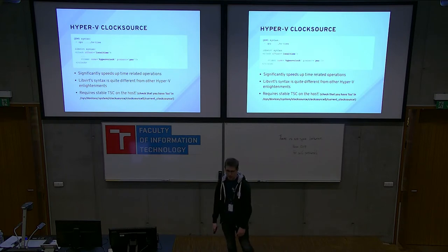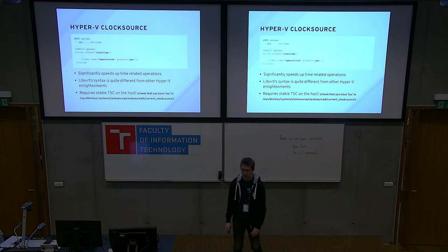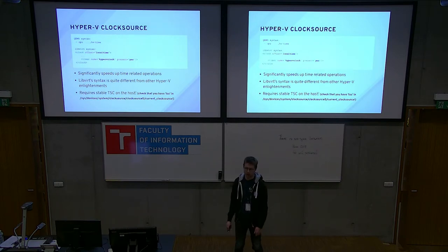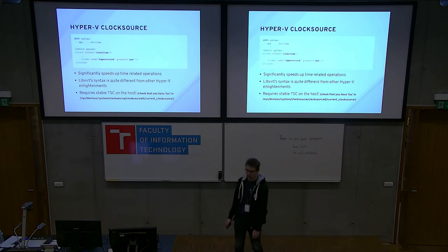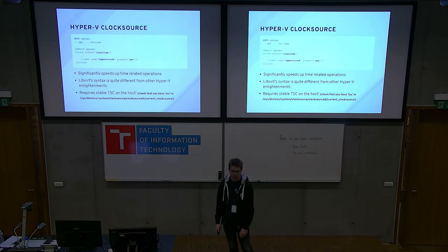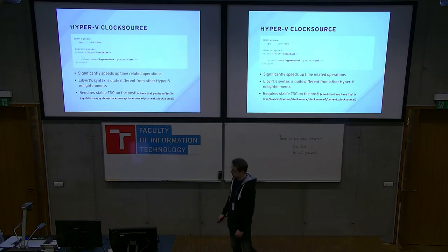The Hyper-V clock source is actually one of the most important enlightenments. Some workloads read the time very frequently — for example, when timestamping logs, database records, or network packets. You want to get timestamps as quickly as possible. If you don't give Windows the Hyper-V clock source, it will use something else like HPET, which may not be as fast. Give it to your Windows guest and you will see a significant speed-up.